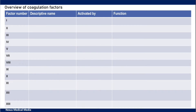Factor 1 is fibrinogen and the active form is fibrin. The active form is usually written with an 'A' in front — for example, factor 1A is fibrin because it's the active form of fibrinogen.